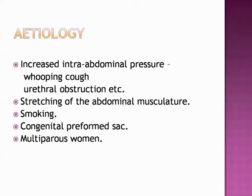Hernia also occurs in a congenital preformed sac, which is the remains of the processus vaginalis. Whenever the processus vaginalis remains patent, it can lead to hernia development. In multiparous women, femoral hernia is more common, possibly due to stretching of the pelvic ligaments. These are the main etiological factors leading to hernia development.